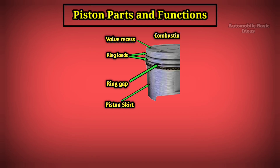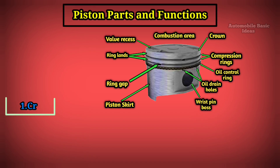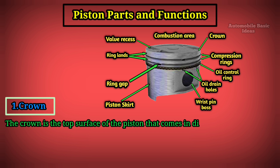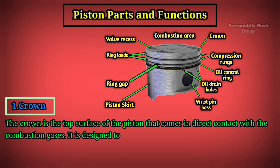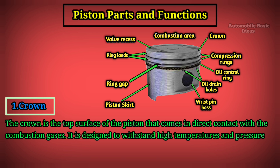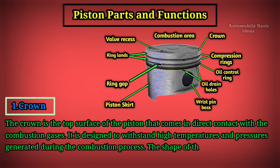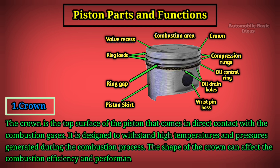Piston Parts and Functions. Crown: The crown is the top surface of the piston that comes in direct contact with the combustion gases. It is designed to withstand high temperatures and pressures generated during the combustion process. The shape of the crown can affect the combustion efficiency and performance of the engine.